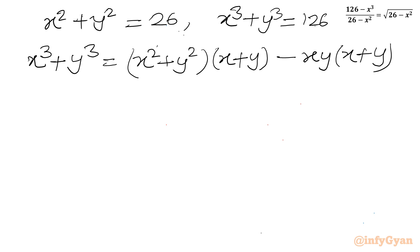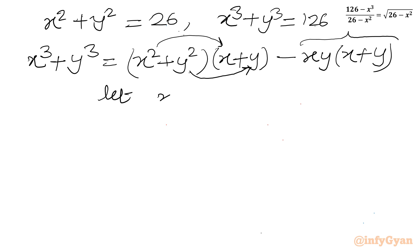If we multiply x² with x we get x³, and y² with y we get y³. The cross product terms are x²y and xy², which we need to subtract. Now let us assume x plus y equals a and xy equals b.